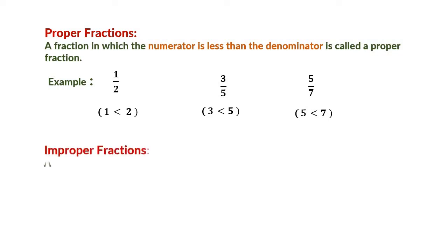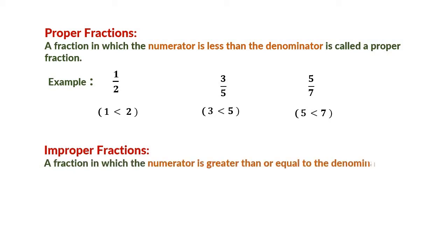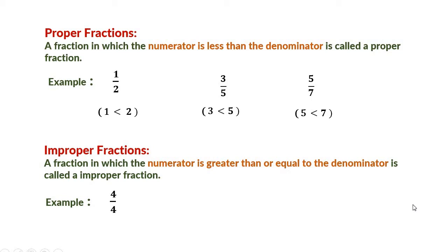Improper fractions: a fraction in which the numerator is greater than or equal to the denominator is called an improper fraction. For example, 4 by 4, where numerator 4 is equal to denominator 4, so it is an improper fraction. Another example is 8 by 5, where numerator 8 is greater than 5. And 11 by 9, where numerator 11 is greater than 9. These are all improper fractions.